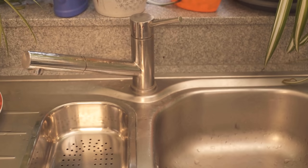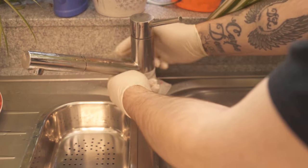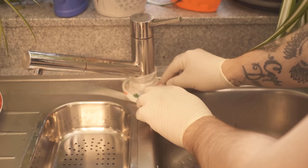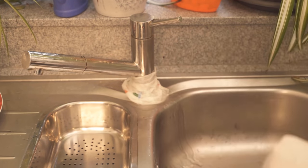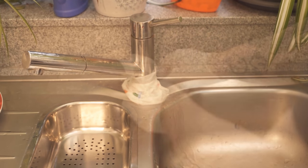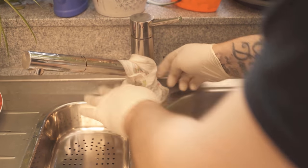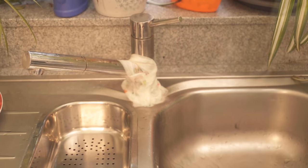Then you can let it drip off a bit, but you should not wring it out. Now we put this cloth around our faucet, especially at the places where the lime deposits are already very strong. Do that until you have really covered all of it.